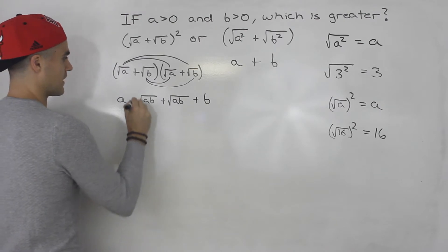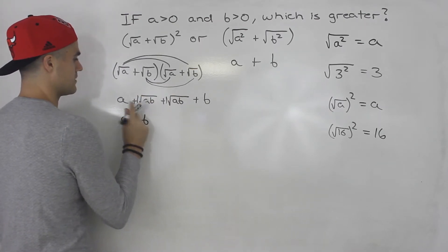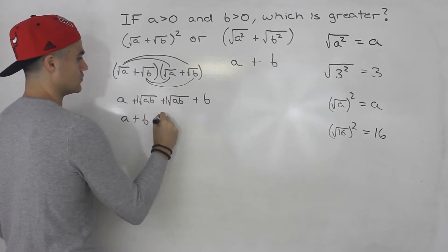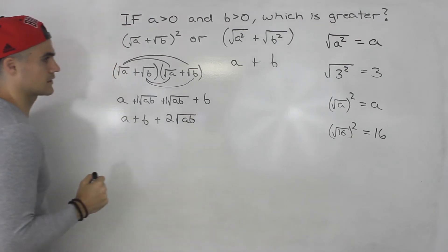So when we simplify this, there's like a one in front of these. So we have a plus b. A plus b plus two root ab, like that.